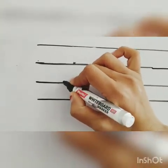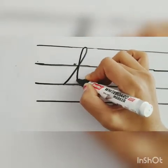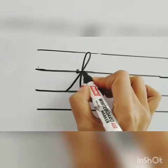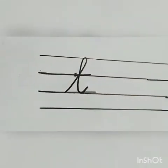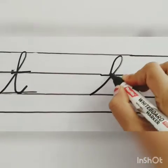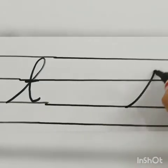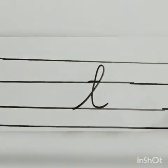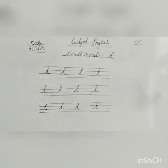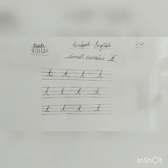It's easy because you know very well how to write 'l'. So write like an 'l' and draw a sleeping line in between. Make like an 'l' and give a sleeping line — that's how you write small cursive 't'. So kids, in this way you have to write small cursive 't' in your English notebook.